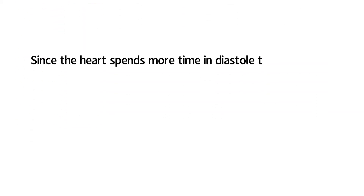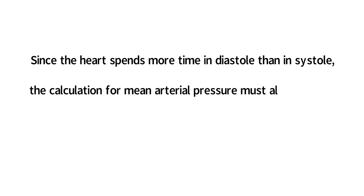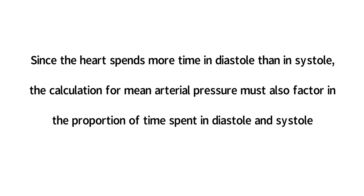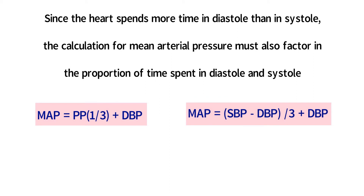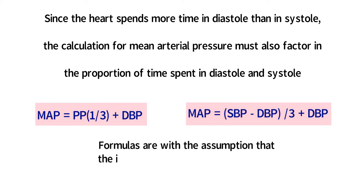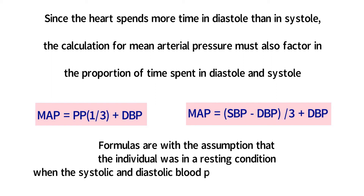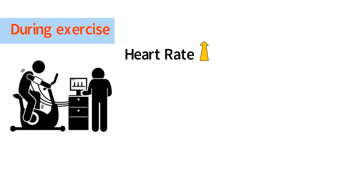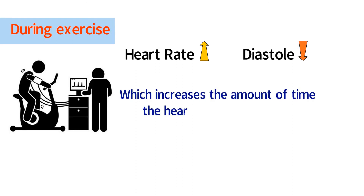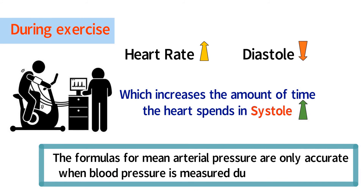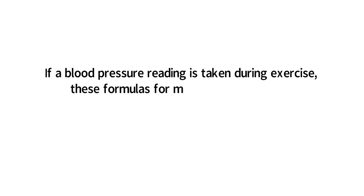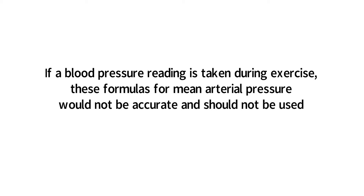Since the heart spends more time in diastole than in systole, the calculation for mean arterial pressure must factor in the proportion of time spent in each phase. An important consideration is that the formulas presented assume the individual was in a resting condition when the blood pressure values were obtained. During exercise, as heart rate increases, diastole shortens, which subsequently increases the amount of time the heart spends in systole. Therefore, the formulas for mean arterial pressure are only accurate when blood pressure is measured during a resting state. If taken during exercise, these formulas would not be accurate and should not be used.